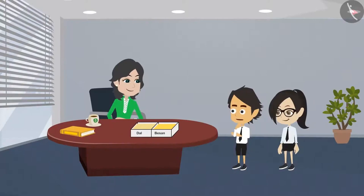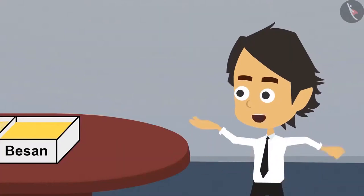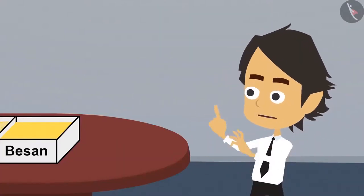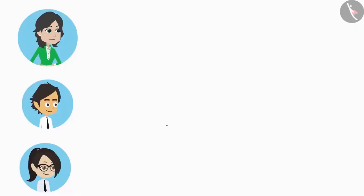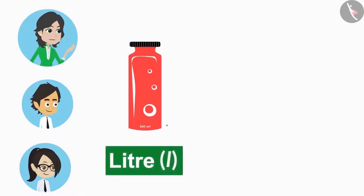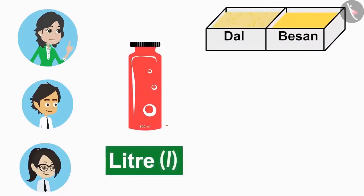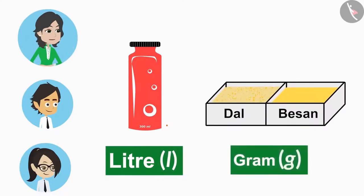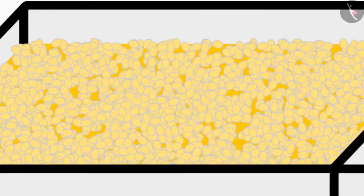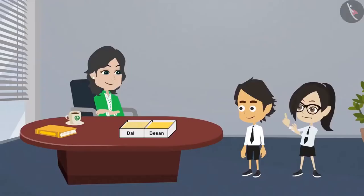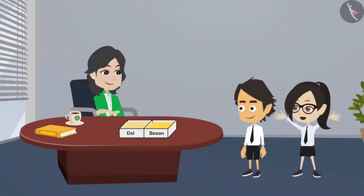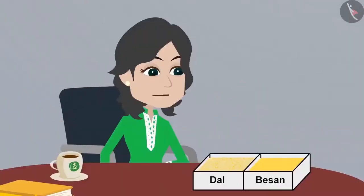This means this is not the way to divide dal into two equal halves. We can neither cut nor count it, and unlike liquid, we cannot measure besan. So, how do we divide besan? Just like we use liters to measure liquid, we use grams to measure solid objects. Objects like dal which are not easy to count, and objects like besan that cannot be counted, are measured in grams. This means after measuring besan in grams, we can divide it into two halves.